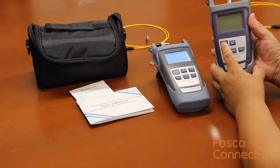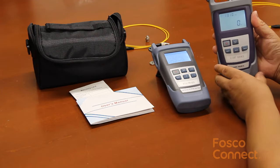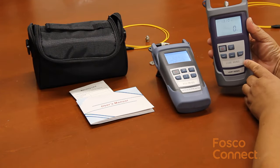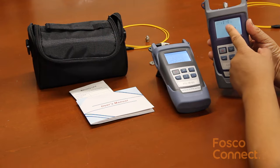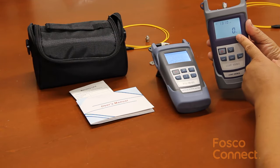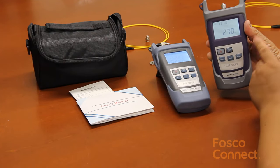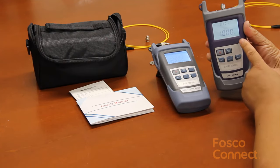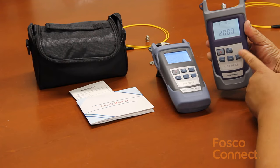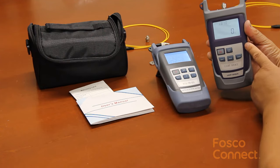Here is a handheld single mode laser light source. Let's turn it on. Now it is emitting light at 1310 nanometer single mode at steady continuous mode. We can switch it to 270 hertz pulse mode, 1000 hertz pulse mode, 2000 hertz pulse mode, and we are switching it back to zero hertz steady continuous mode.